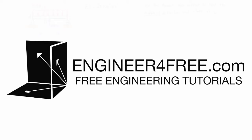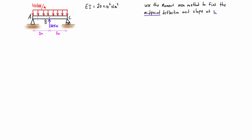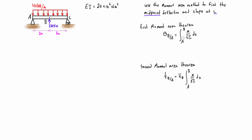Welcome back. In this video we want to use the moment area method to find the midpoint deflection on this beam and also the slope at C. This is a bit different than the last example because we're looking for deflection at one point and slope at another. Because this problem is symmetrical, the deflection at the middle is going to have a slope of zero — a critical thing to realize. With simply supported beams, that's a dead giveaway that point B will be one of the points used in the first and second moment area theorems.